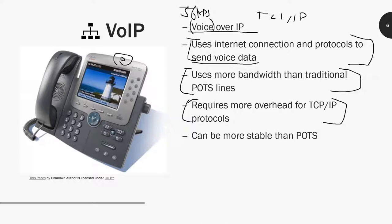VoIP can be more stable than POTS, but that depends on implementation. If you have a network engineer who doesn't know what they're doing, or someone who doesn't configure quality of service properly, your VoIP will run rampant with a lot of jitter and you won't be able to have a clean conversation. People will get very angry when they're cutting in and out. VoIP is very complicated but also very elegant.